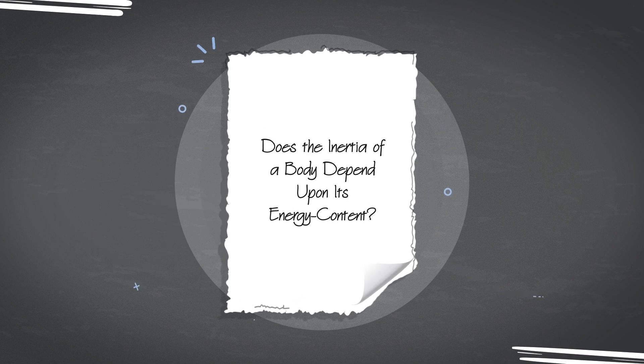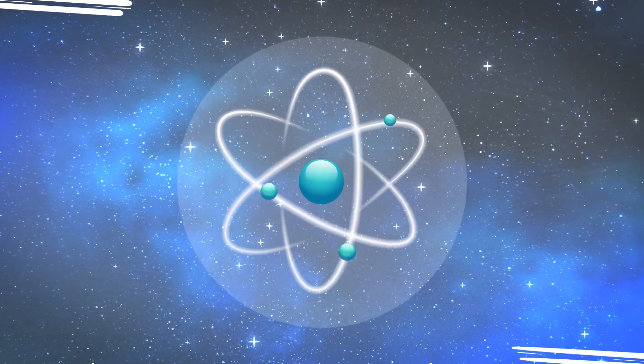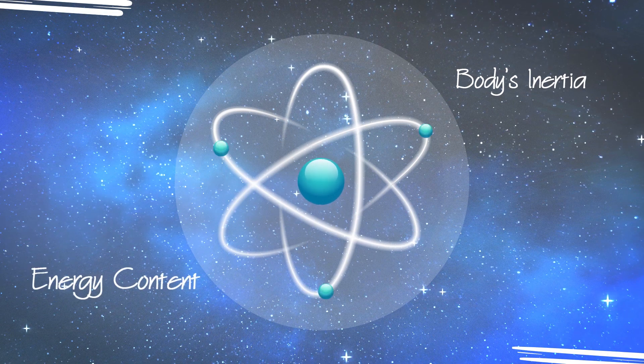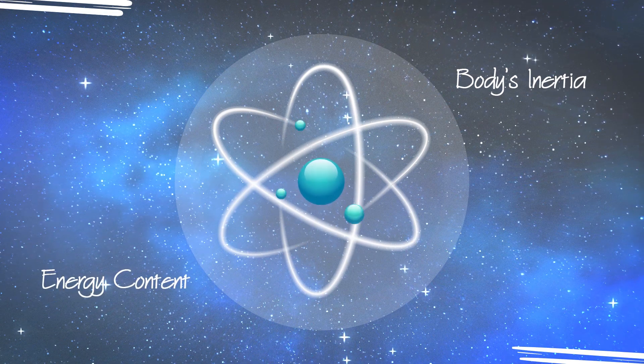His paper delivered an unambiguously affirmative response to the question he posed. E equals mc-squared means that a body's inertia, or initial mass, is directed by its energy content and directly proportionate to it.